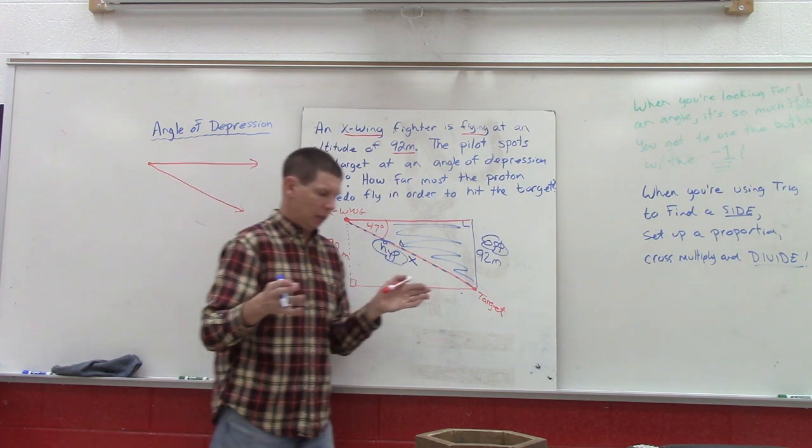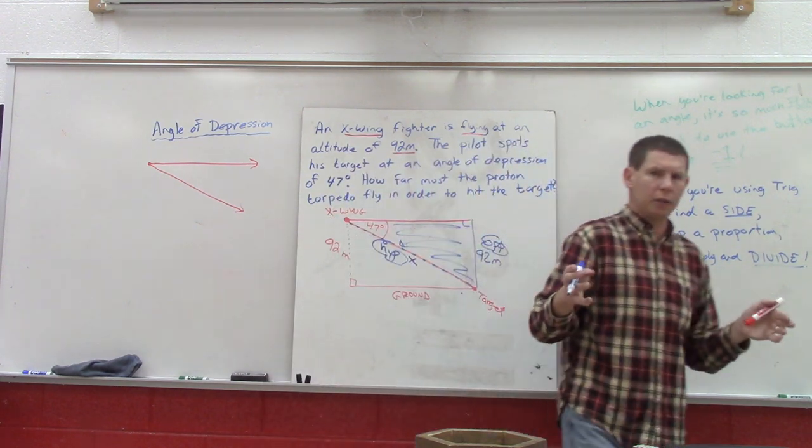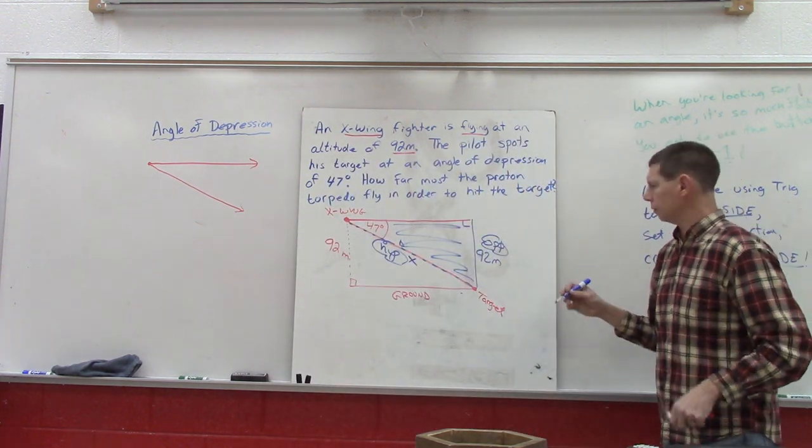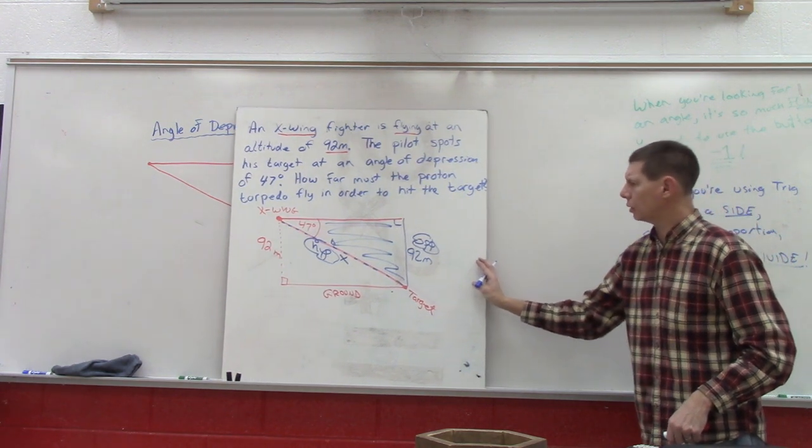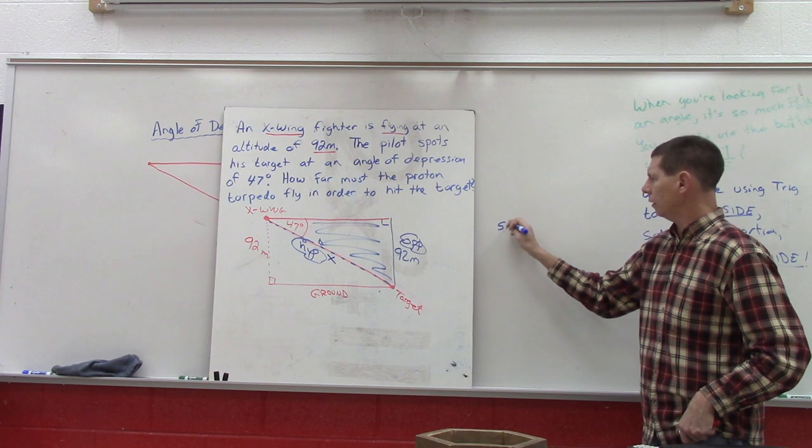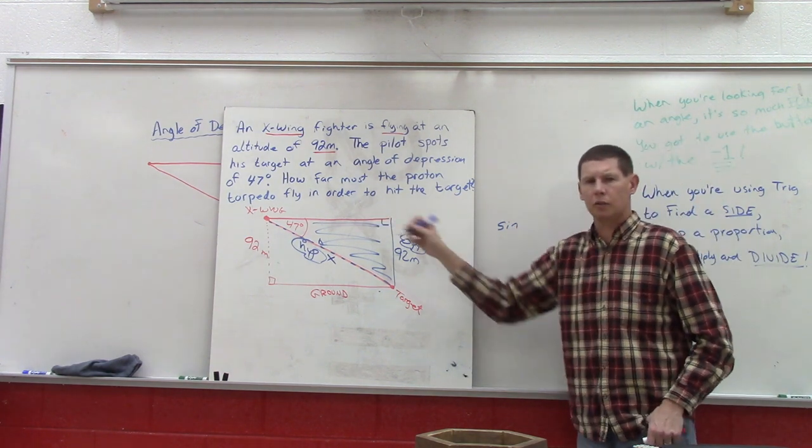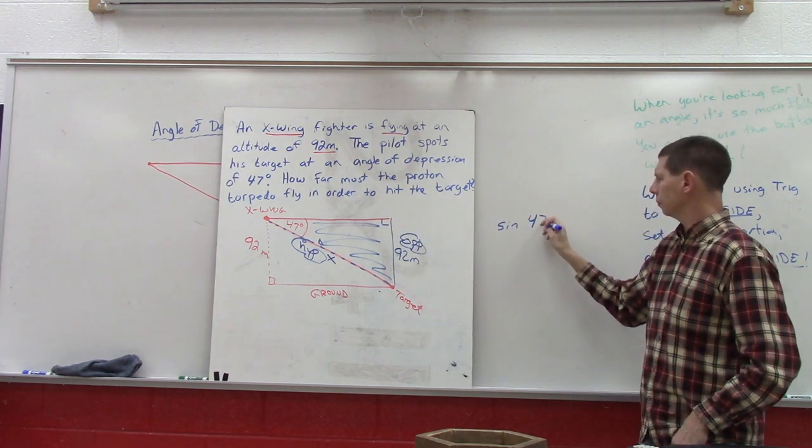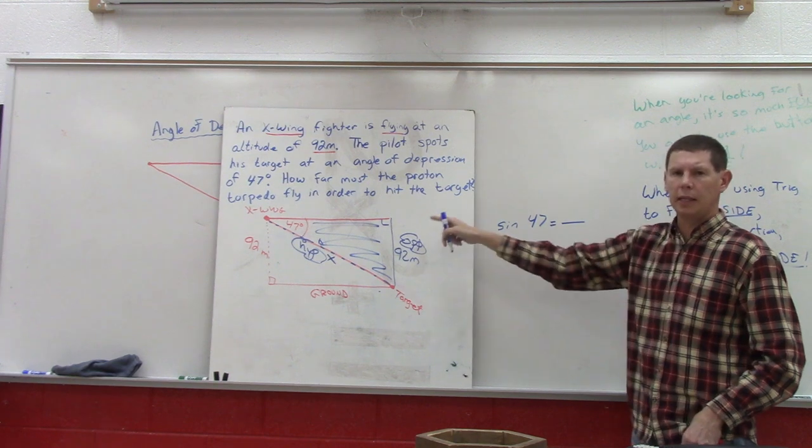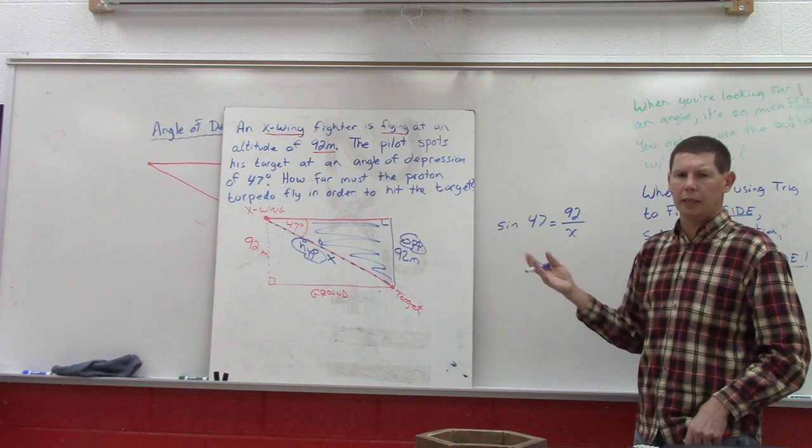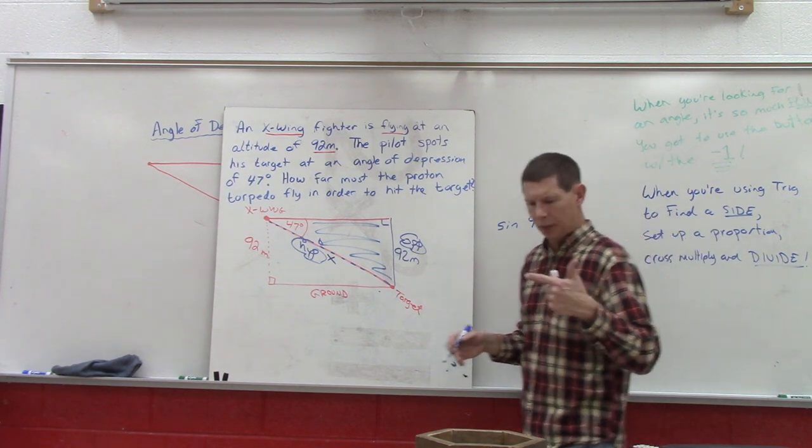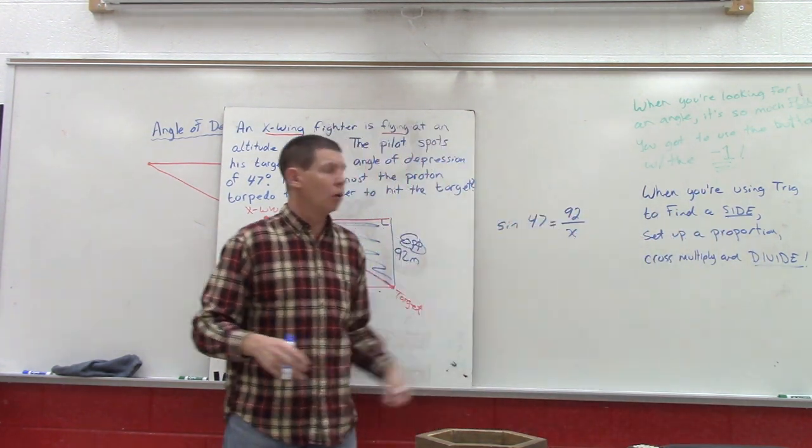So when we look at our trig formulas, the opposite and hypotenuse deals with the sine function. So when we go to solve this, we're going to say the sine of our angle, which is 47, equals the opposite of 92 over that distance X.